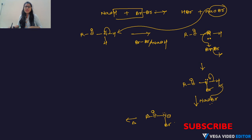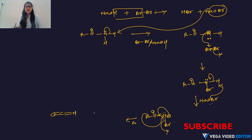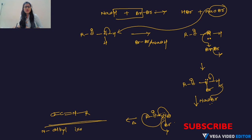Under heating conditions, the alkyl group migrates to the nitrogen, the Br departs, and the negative charge donates its electron to the C–N bond. We get a C=O double bond with the alkyl group now attached to nitrogen. This intermediate is alkyl isocyanate (R–N=C=O).